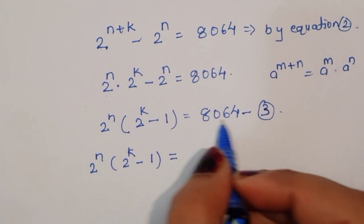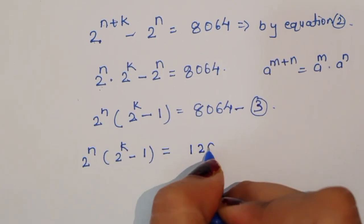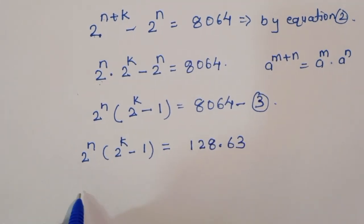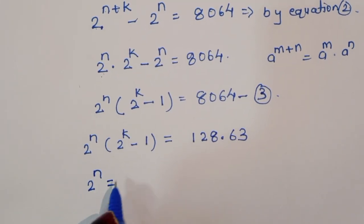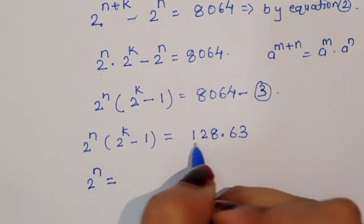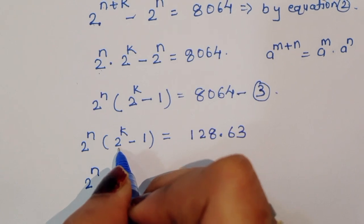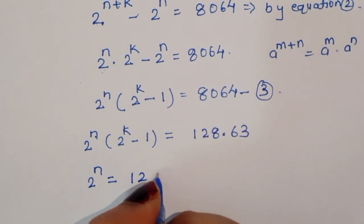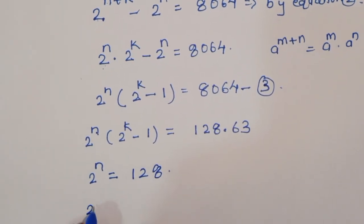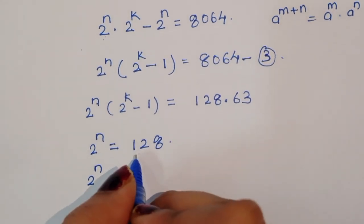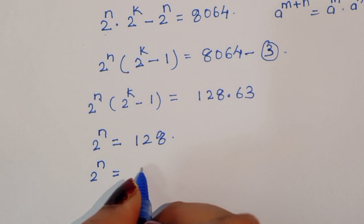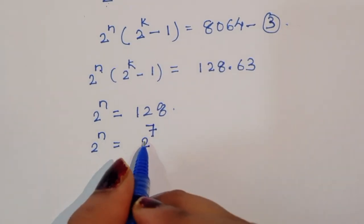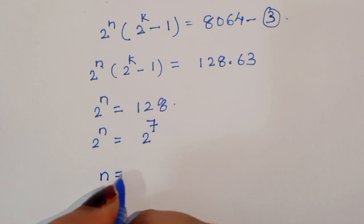The factor of 8064 can be written as 128 times 63. So we match: 2 power n is equal to 128, and 2 power k minus 1 is equal to 63. Now, 128 in power terms is 2 power 7, so 2 power n equals 2 power 7, which gives us n is equal to 7.